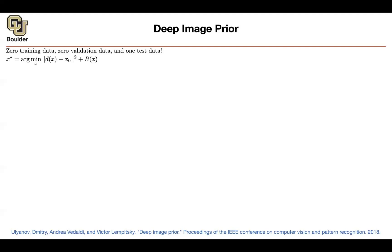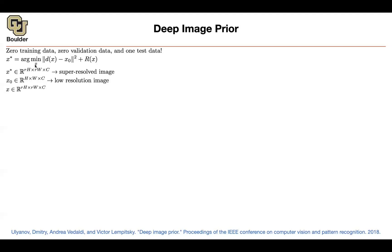It turns out you can solve a minimization problem with respect to X. X* is going to give you the super-resolved image out of this minimization process — so at inference time, at test time, you are solving an optimization problem. X* is high resolution and the upsampling factor is R. X0 is your low resolution image, and the thing you're trying to optimize over is X, which has the same resolution as the super-resolved image coming out of this minimization process.